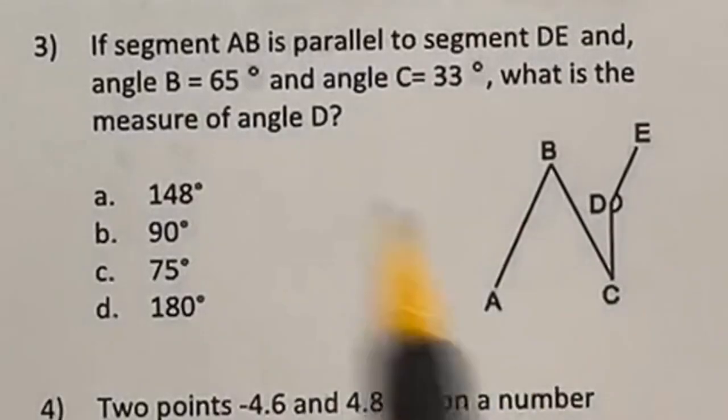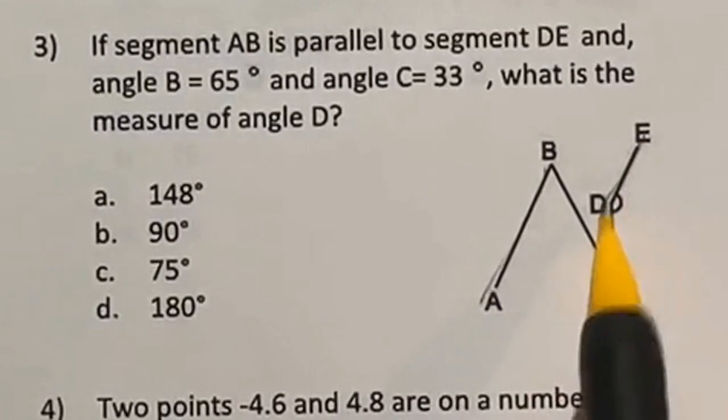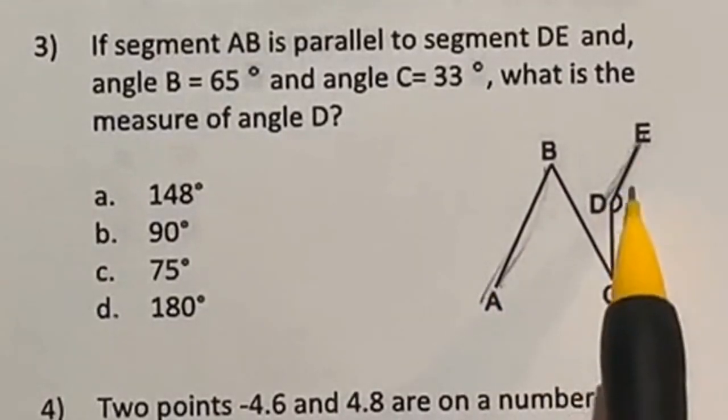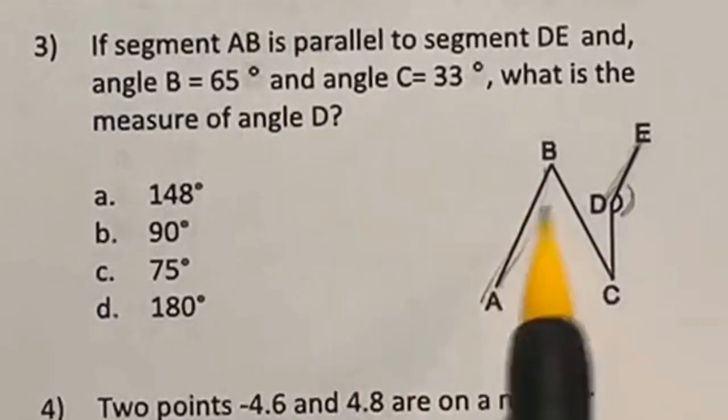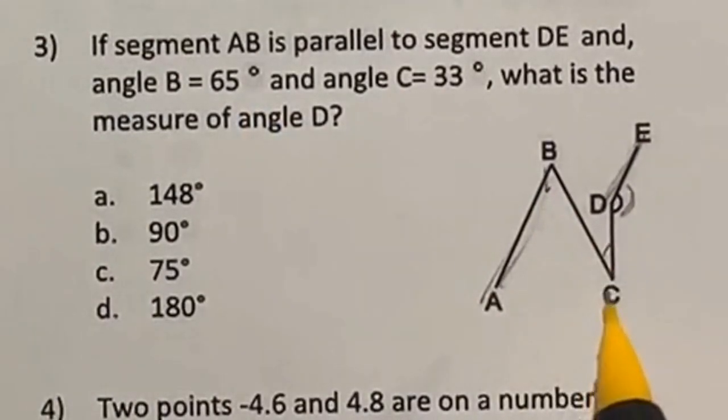For number three, it tells us that AB is parallel to DE. So these two lines are parallel. And then it asks us to find this after giving us that this guy is 65 and this guy is 33.